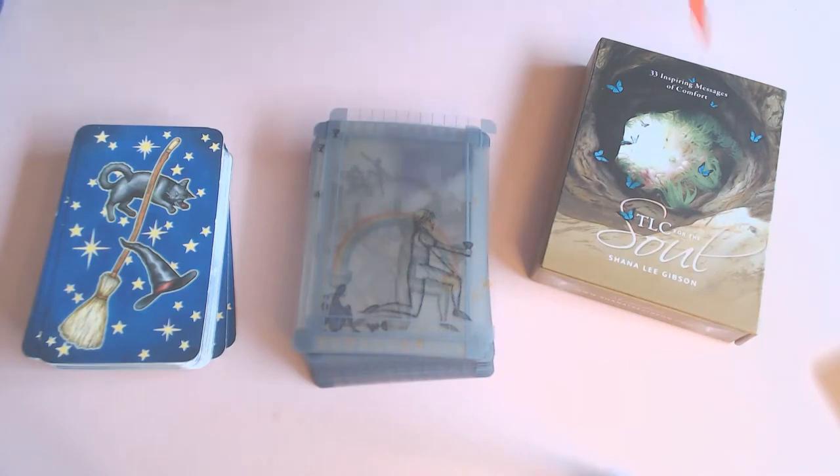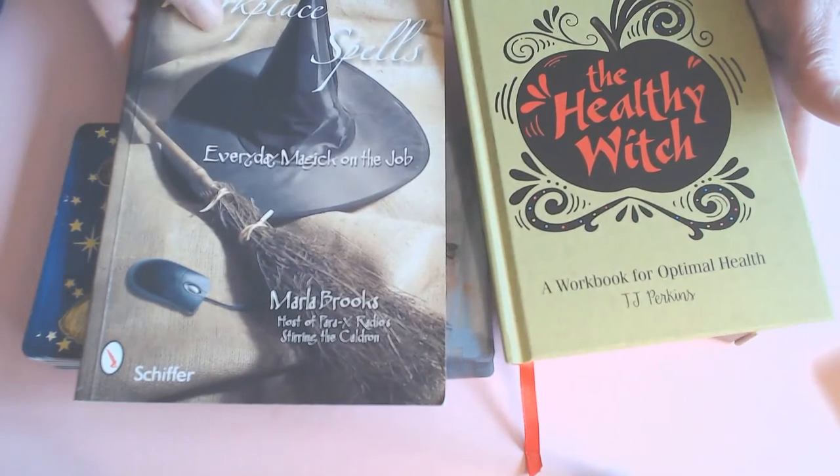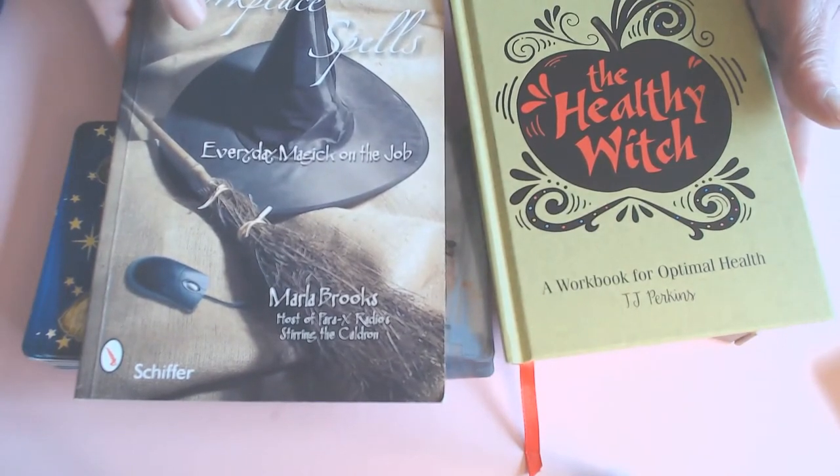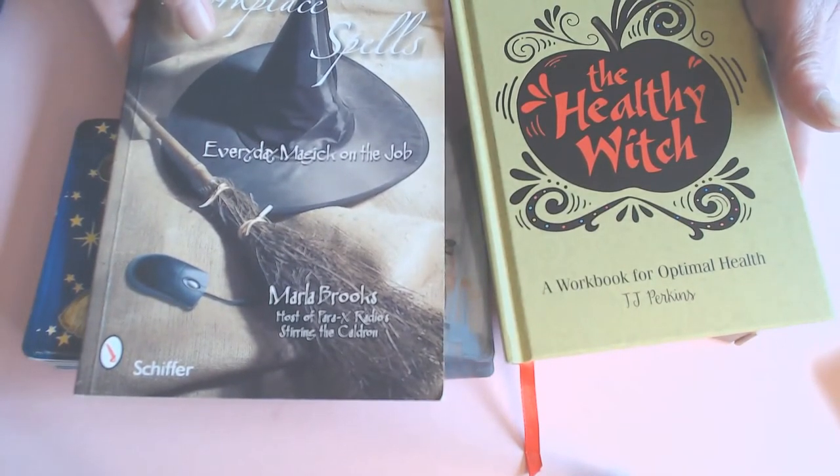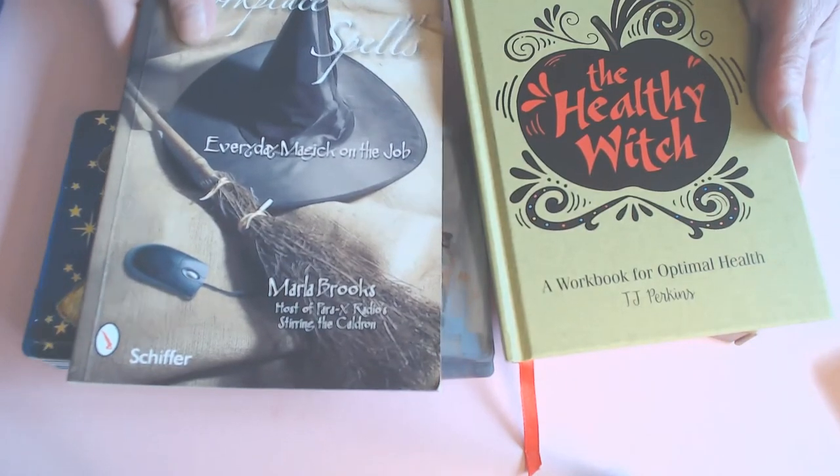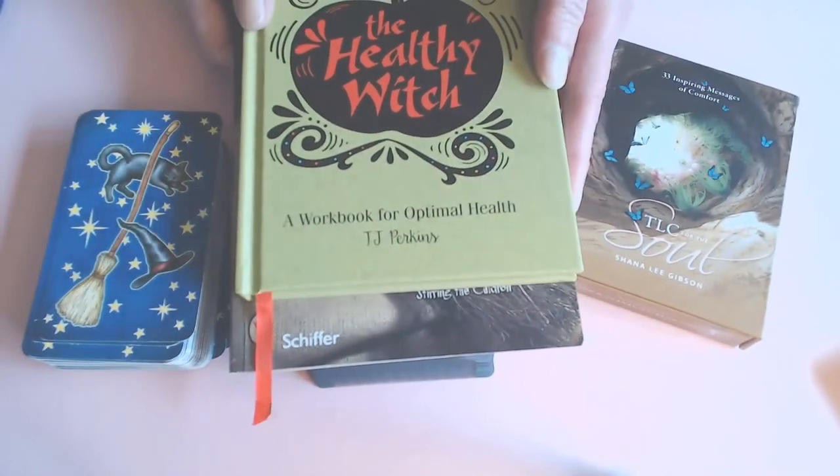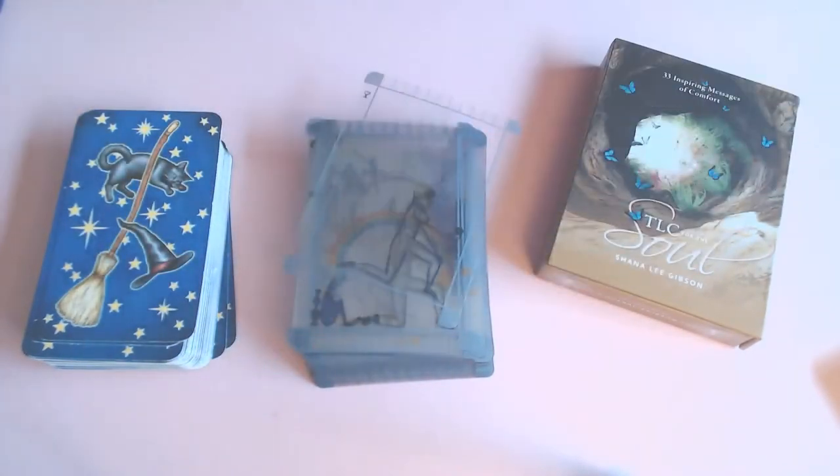And if you would like to get into it yourself then these are the two books. This one is The Workplace and Spells by Marla Brooks. We did the series on her Oracle card, The Witches Oracle Cards. And this one is by T.J. Perkins, The Healthy Witch. And it's great fun.